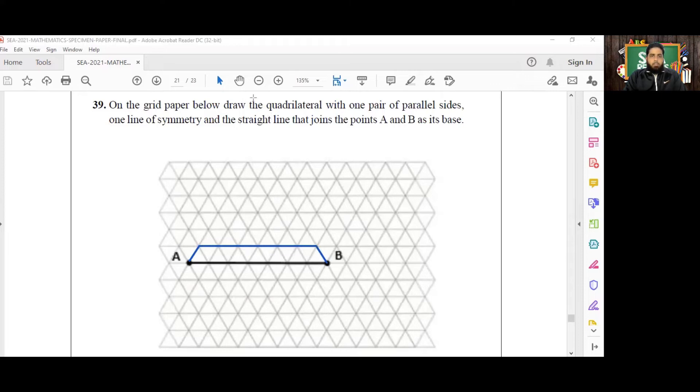You will notice that there are two parallel lines. This line on top here is parallel to the base AB. There will be one line of symmetry that bisects this top line as well as the line AB - it cuts the line AB in half as well as the line opposite to AB, and that is the only line of symmetry in the figure. It is a quadrilateral or four-sided figure, and the base is the straight line joining the points A and B.